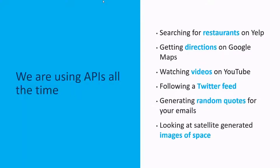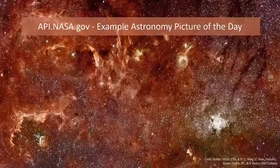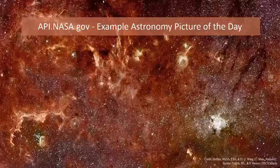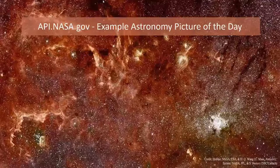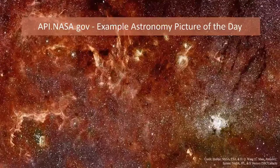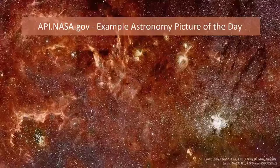We are using APIs all the time — every time we're searching for restaurants on Yelp, getting directions on Google Maps, watching videos on YouTube, following a Twitter feed, generating random quotes for our emails, or looking at satellite-generated images of space. This image is an example of the Astronomy Picture of the Day from NASA. NASA has its own API that you can call to get an astronomy picture every day.